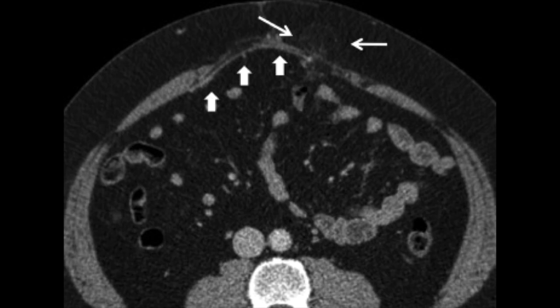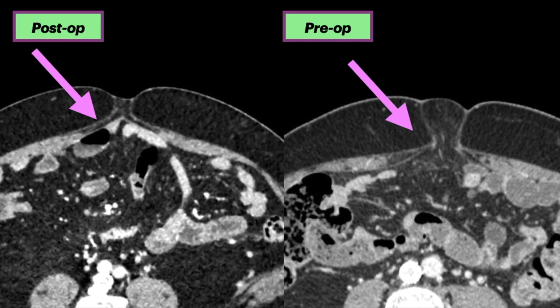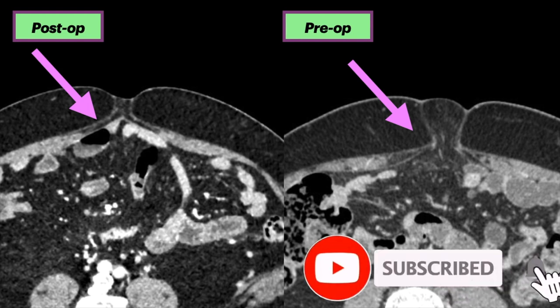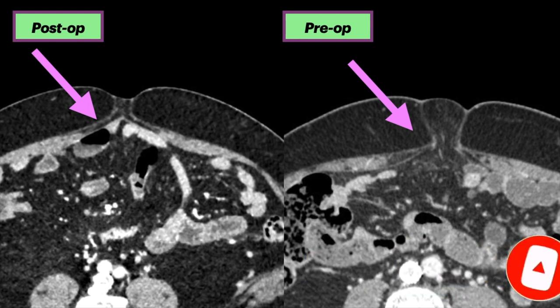The new parietal weakness was favored to be related to obesity. You now know a lot about hernia mesh repairs. Please subscribe for more anatomy and radiology videos.